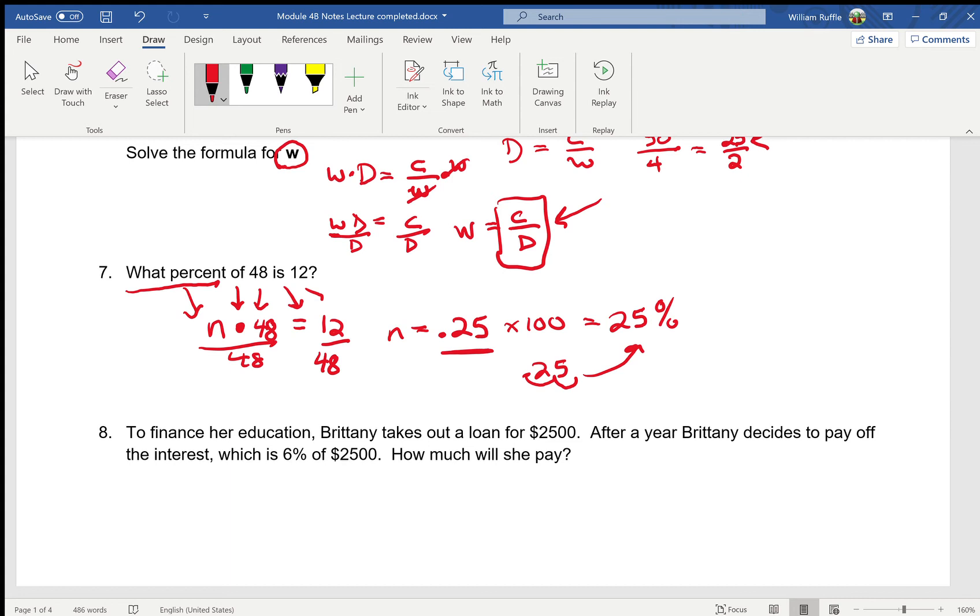All right. So now this question here, to finance her education, Brittany takes a loan out for $2,500. After a year, she decides to pay off the interest, which is 6% of $2,500. How much will she pay? Now, if you remember the question before, we had to do our last step, we had to change the decimal to the percent. This time, we have to change away from the percent as the first step. So I have 6%. Now if I do the decimal moving, it starts here, I go 1, 2. So 6% as a decimal is 0.06. Or you could have just typed in your calculator, 6 divided by 100. Both of them will give you 0.06.